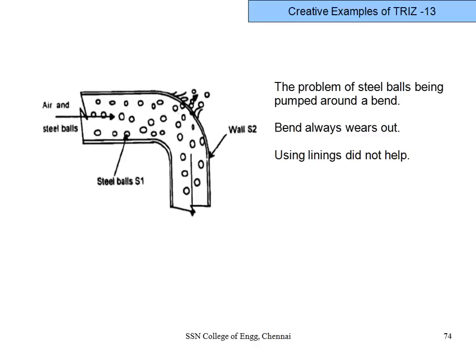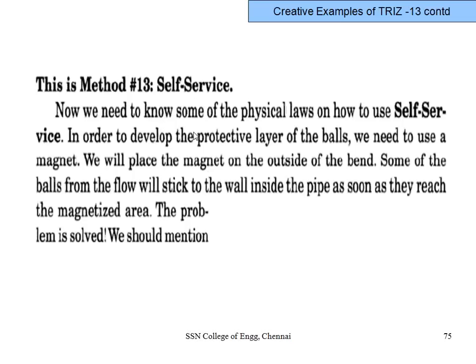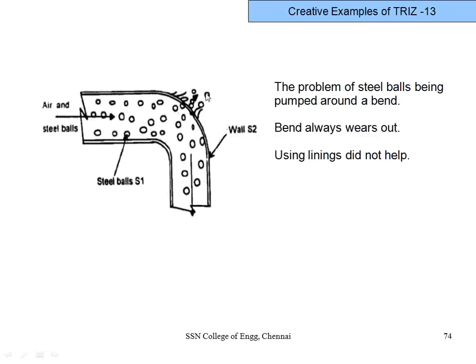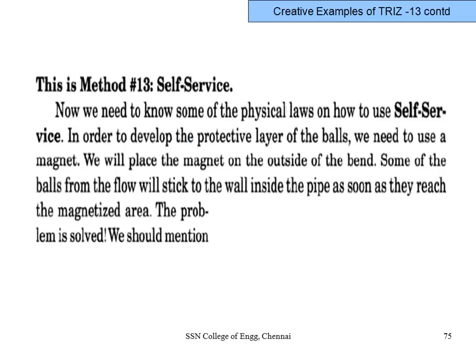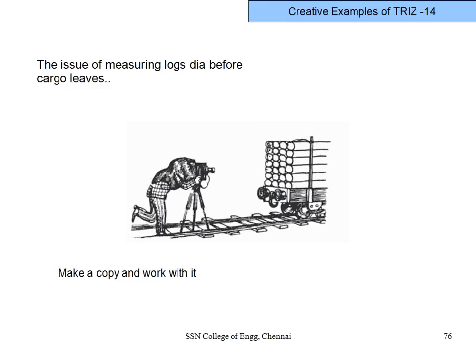A further example: steel balls transported through compressed air pipes always hit and burst at bends. Linings did not work. According to TRIZ, self-help is the best help — use the steel balls themselves as protection. Place an electromagnet at the bend; the first few balls get stuck due to magnetic force, and then they act as a protective cushion so no subsequent ball directly hits the pipe wall. This is called self-help.